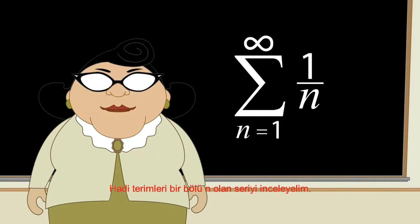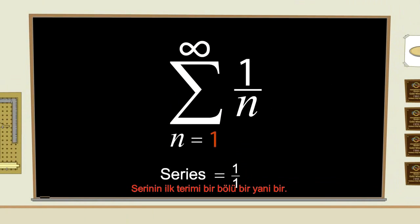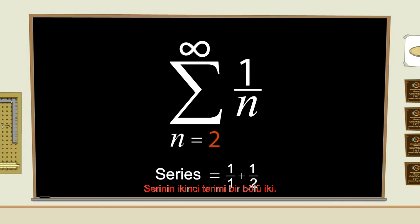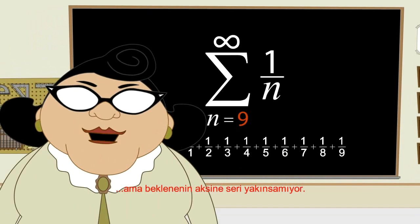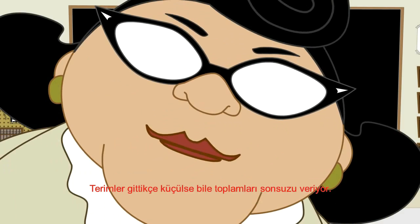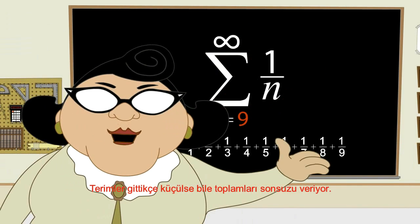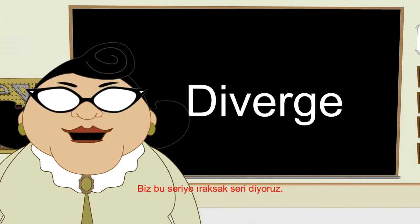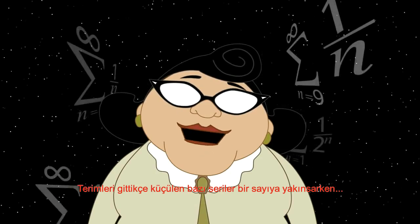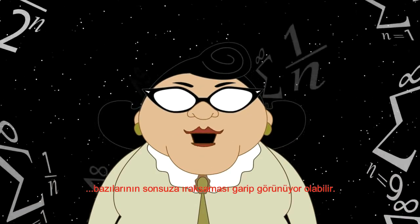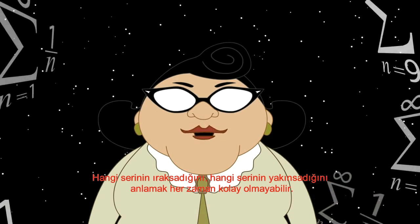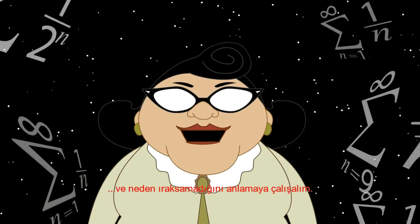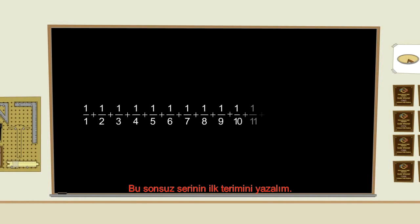But will all series converge as long as each term is smaller than the previous one? Well, let's try a series with the terms 1 over n. Now, the first term in this series is 1 divided by 1, or 1. The second term is 1 divided by 2, or 1 half. The third term is 1 third, and so on. Each term is smaller than the previous term. But it turns out that this series does not converge. Even though the terms get smaller and smaller, they will still add up to infinity. We say that this series diverges. Perhaps it seems strange that some series with decreasing terms converge to a number, while other series with decreasing terms diverge to infinity. It is not always obvious which series will converge or diverge. Let's take a closer look at this series to see why it never converges.